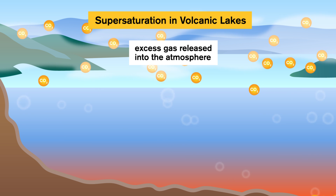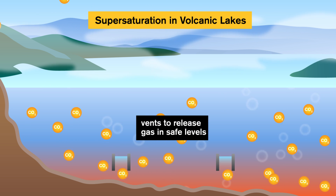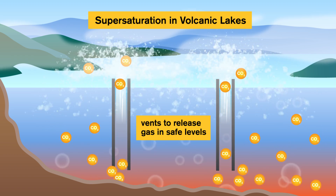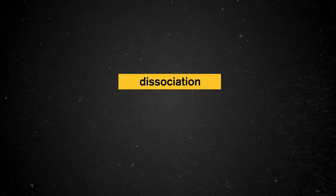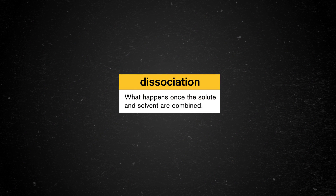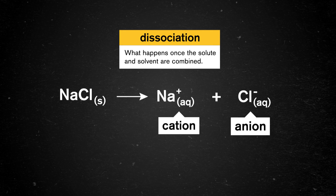If too much gas is released all at once, it can cut off oxygen from organisms in the area. So vents are set up in lakes where this is common to release the gas at safe levels. But there are even more factors to consider when ionic substances are involved. Let's talk about dissociation — what happens once the solute and solvent are combined. The components split up into their positively charged cations and negatively charged anions when in solution.